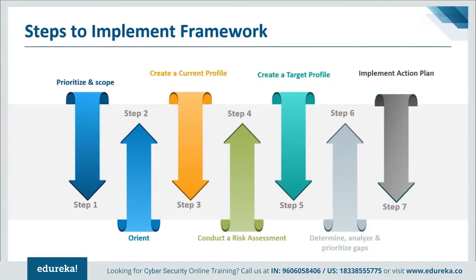Step seven is to implement the action plan. The organization determines which actions to take to address the gaps identified in the previous step and adjusts its current cybersecurity practices to achieve the target profile. The framework identifies informative references regarding the categories and subcategories, but organizations should determine which standards, guidelines, and practices — including sector-specific ones — work best for their needs. Organizations repeat the steps as needed to continuously assess and improve cybersecurity, and may also use this process to align their cybersecurity program with their desired framework implementation tier.